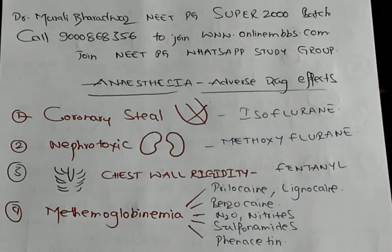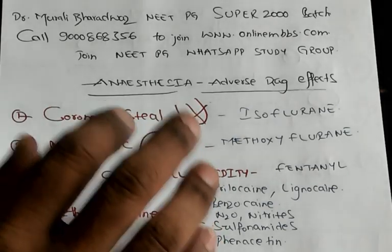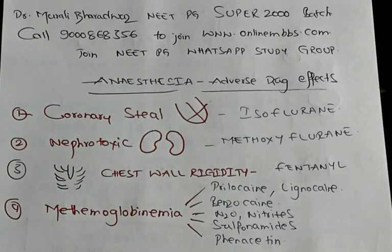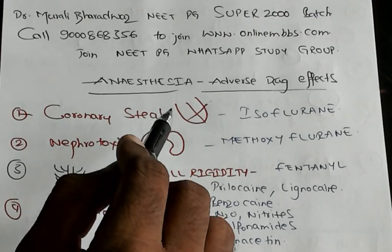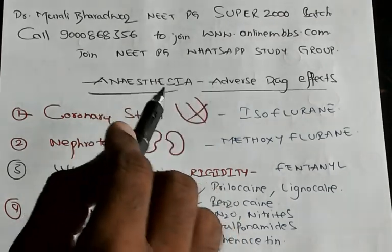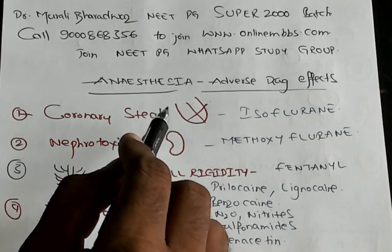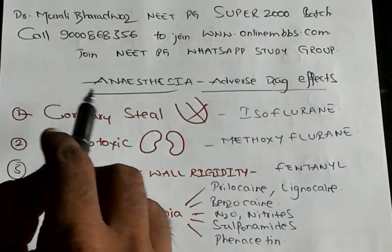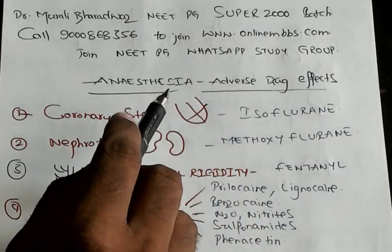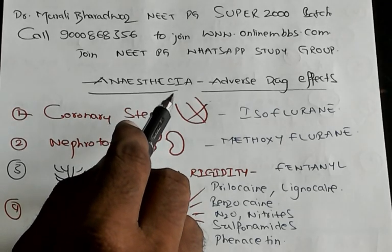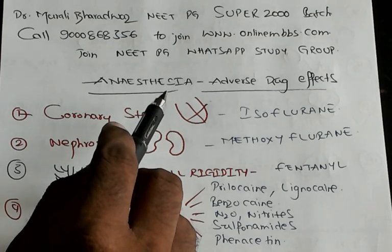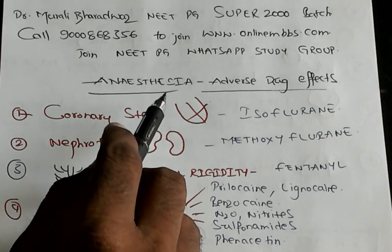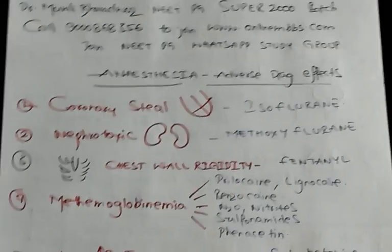Good morning everybody. Anesthesia is such a standard subject — it is like investment into mutual funds. Totally there will be about 500 points in anesthesia. Then definitely you will answer 10 out of 10 correct in the NEET-PG exam. This is Dr. Murali Bhargwaj, to make you all experts in those 500 essential points in anesthesia for the NEET-PG. Let us make the start.